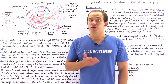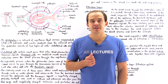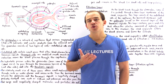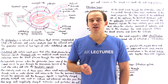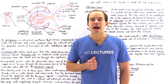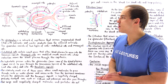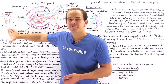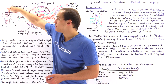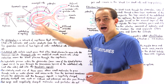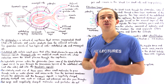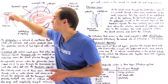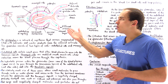Every single nephron within our kidneys contains a structure known as the renal corpuscle. The renal corpuscle is involved in filtering our blood, as we'll see in just a moment. If we take a look at the nephron and zoom in on this structure, we get the diagram of the renal corpuscle, which is found in this segment of the nephron.